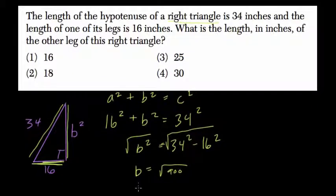So what number times itself equals 900? That's 30. You can think in terms of 9. The square root of 9 is 3. The square root of 900 is 30. It's a proportional connection right there. So here the answer is 4, or the choice 4, which is 30. All right, I hope that helps.